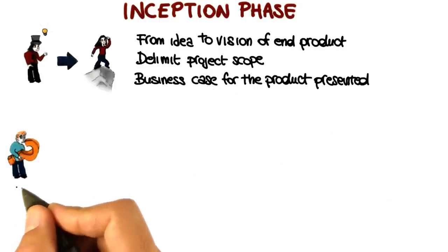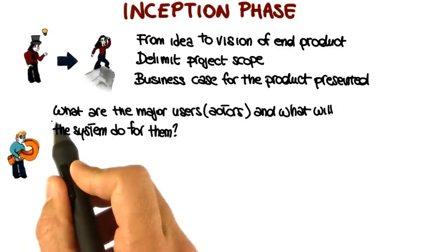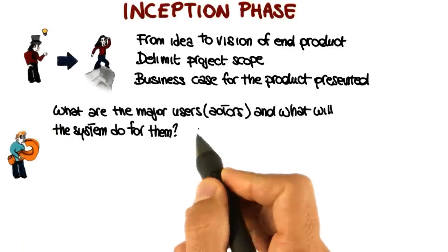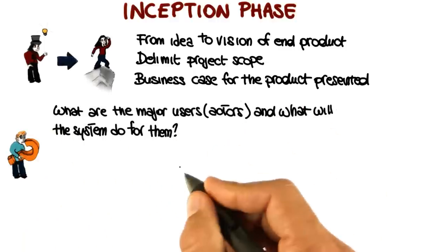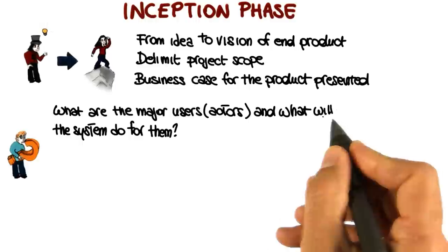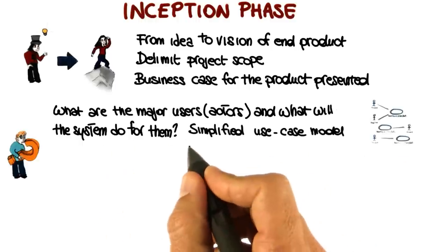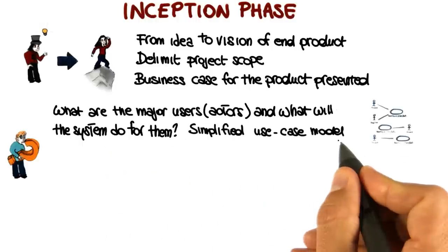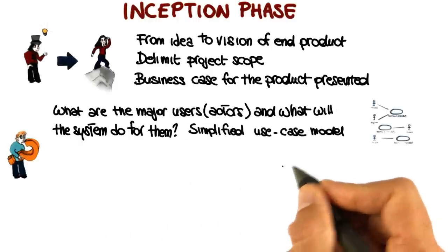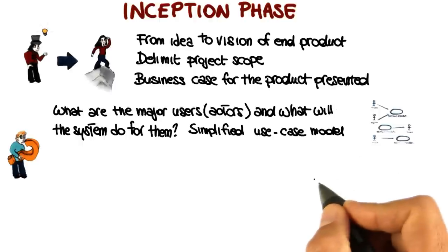Specifically, this phase answers three main questions. The first one is, what are the major users, or actors, to use the UML terminology, and what will the system do for them? To answer this, this phase produces a simplified use case model, where only a few use cases are represented and described. So this is a sort of initial use case model.